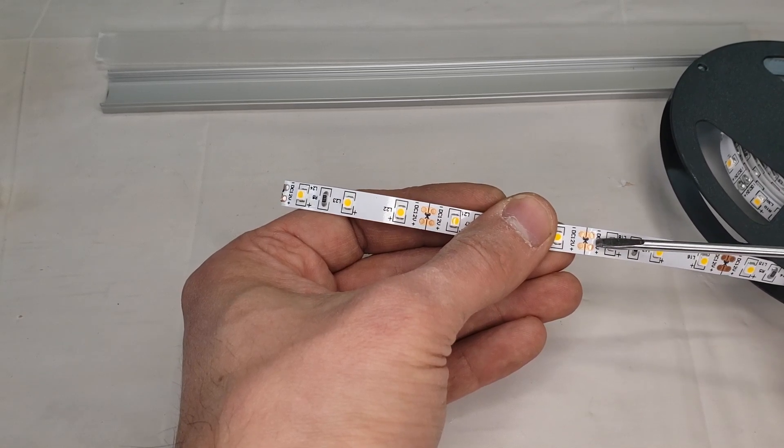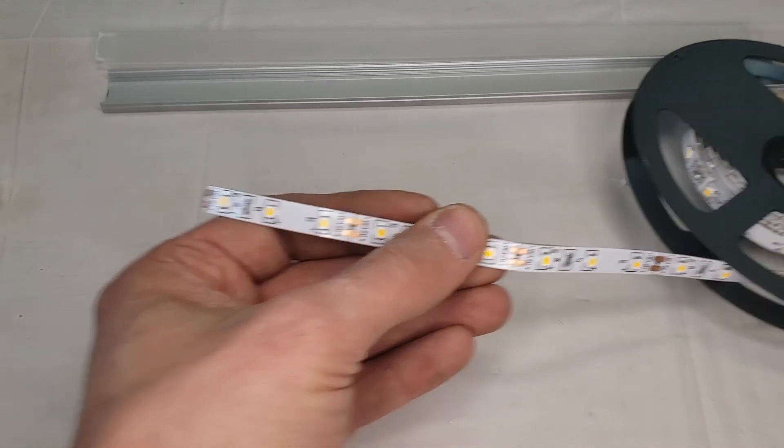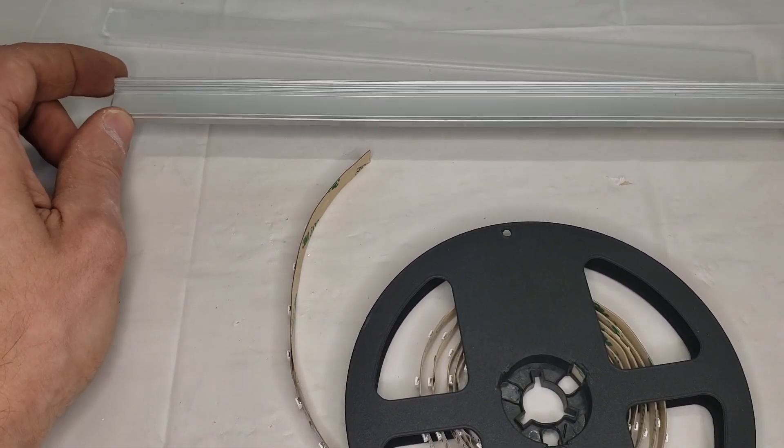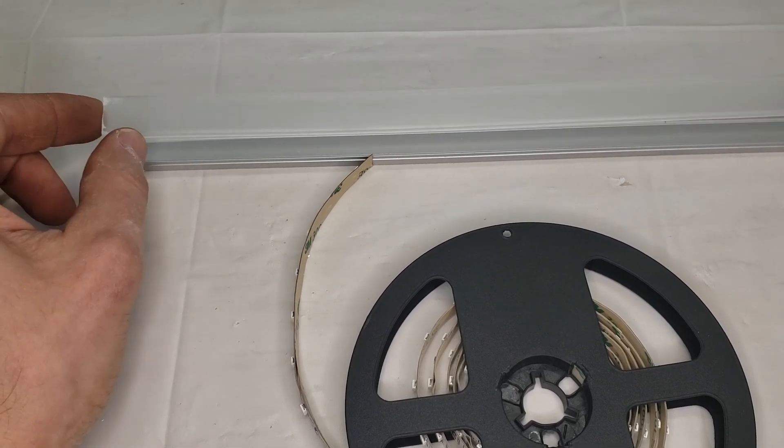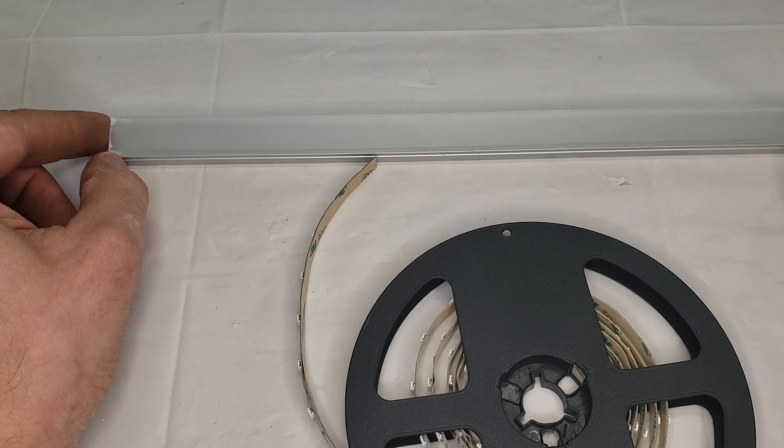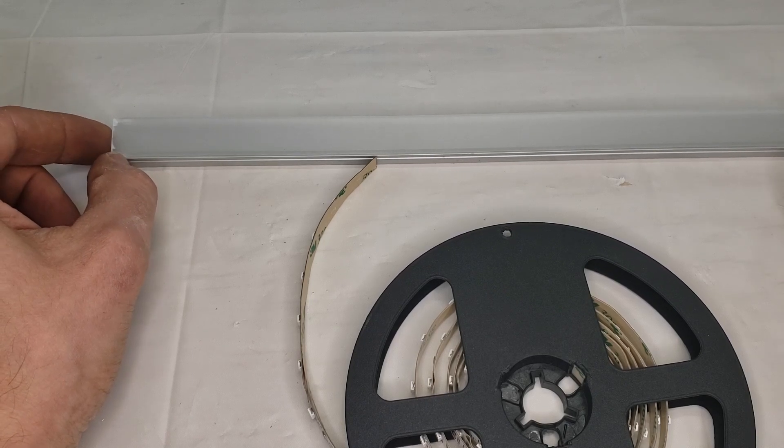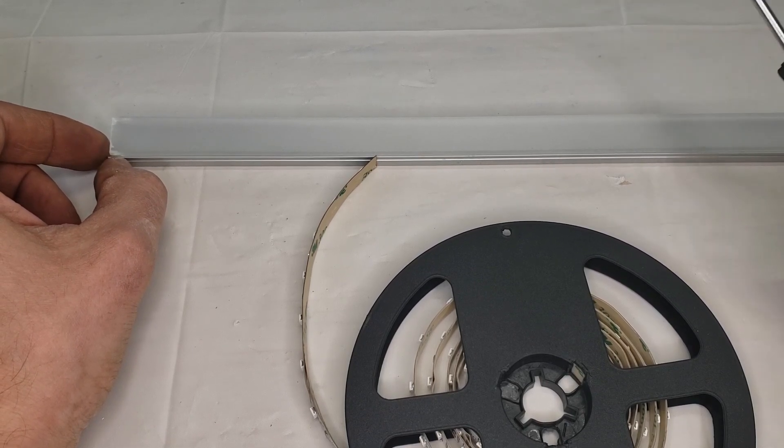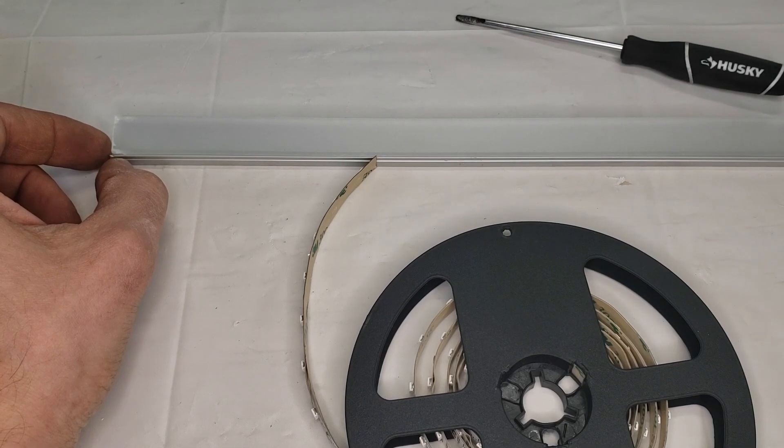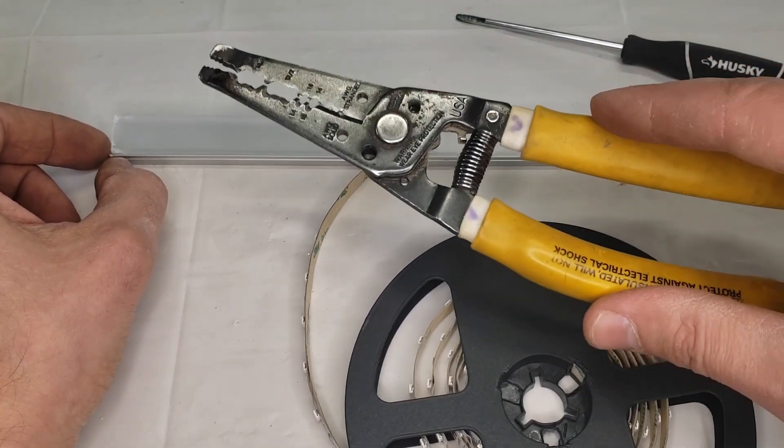As an option here, we have an aluminum channel with a frosted lens. It's optional if you want to maybe make it look nicer. I'm going to be using a small terminating screwdriver and a pair of wire strippers here.